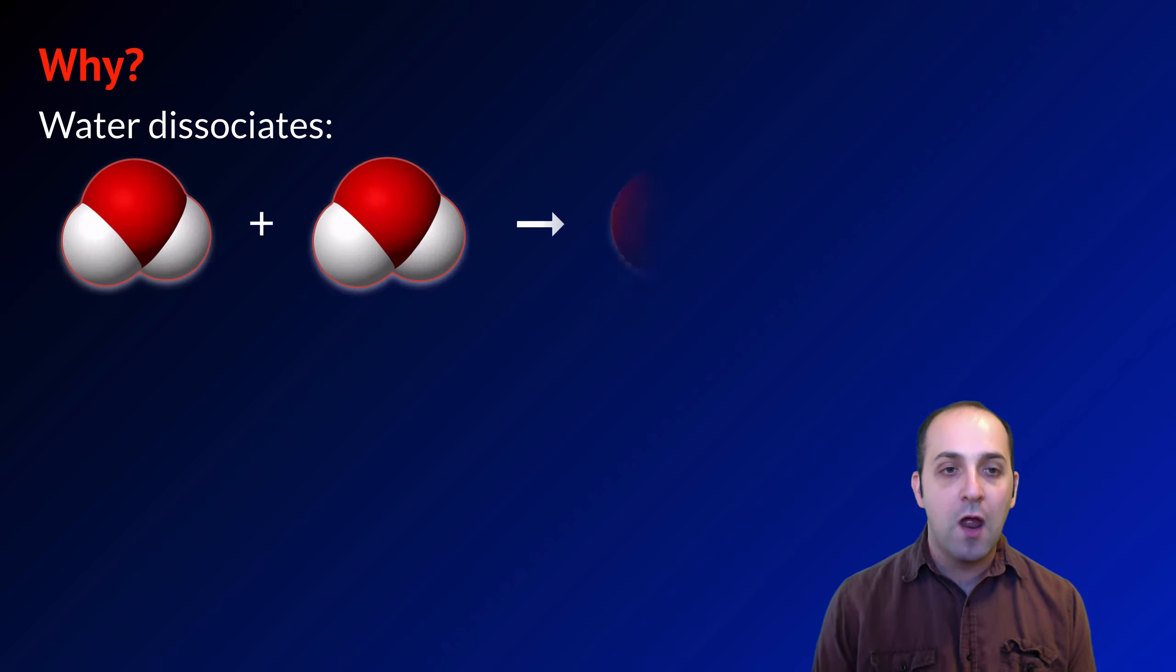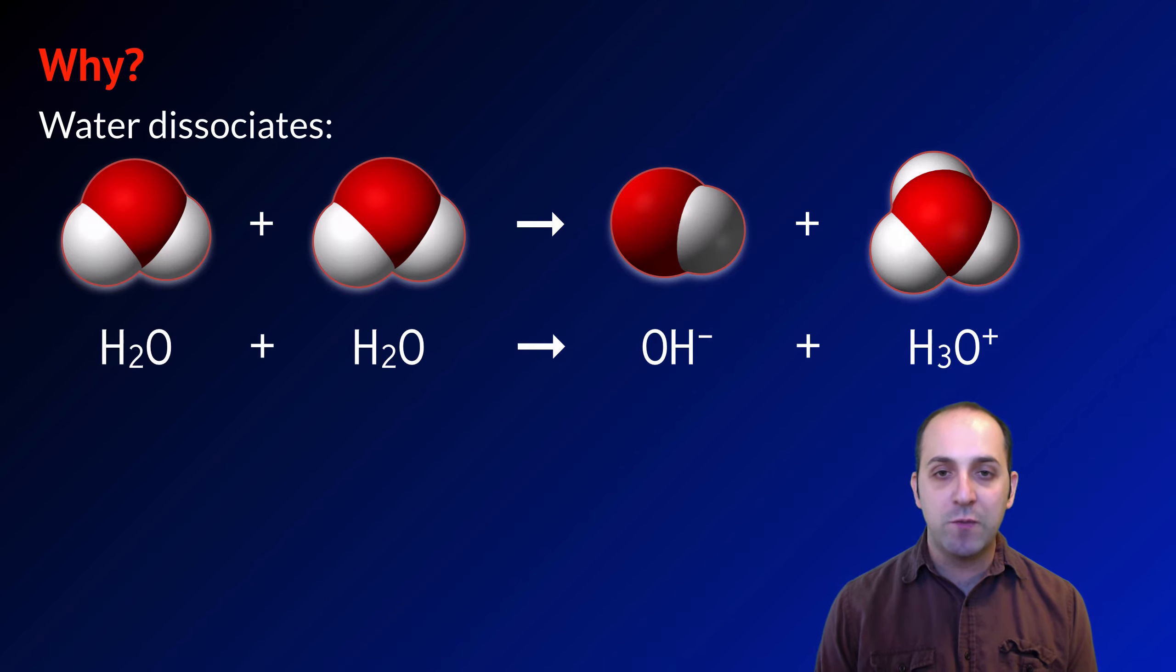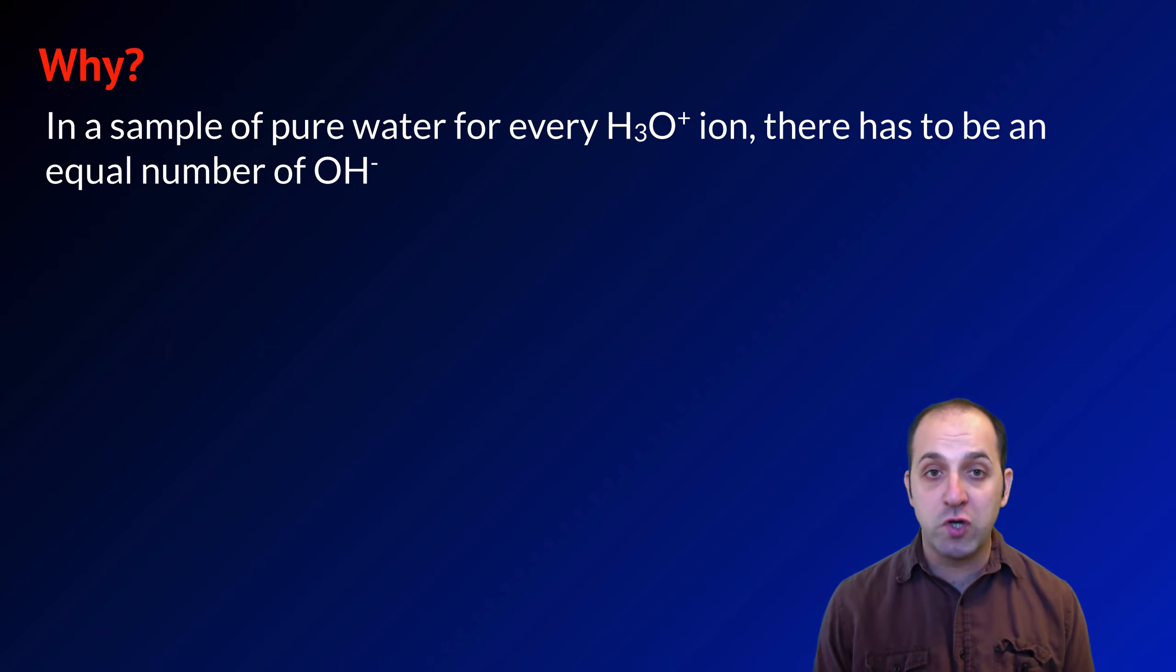So a natural question is why is this the case? You need to understand that water has a tendency to dissociate. If you take two water molecules and you put them together, occasionally one of those water molecules will give a proton to the other water molecule, which will produce a hydroxide ion and a hydronium ion.